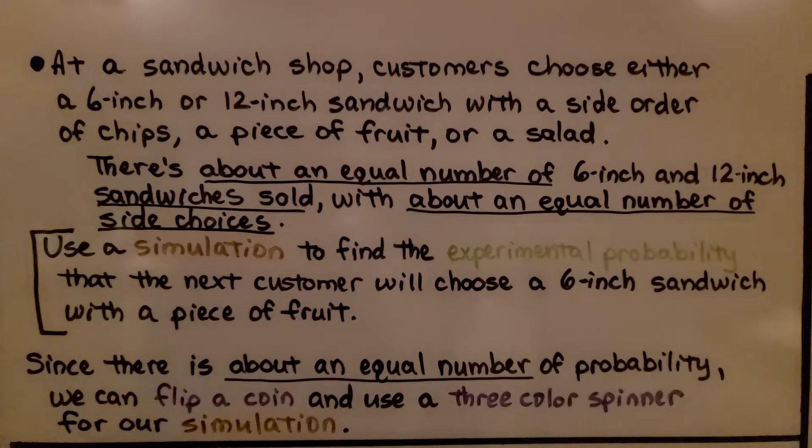At a sandwich shop, customers choose either a 6-inch or 12-inch sandwich with a side order of chips, a piece of fruit, or a salad. There's about an equal number of 6-inch and 12-inch sandwiches sold, with about an equal number of side choices. Use a simulation to find the experimental probability that the next customer will choose a 6-inch sandwich with a piece of fruit.